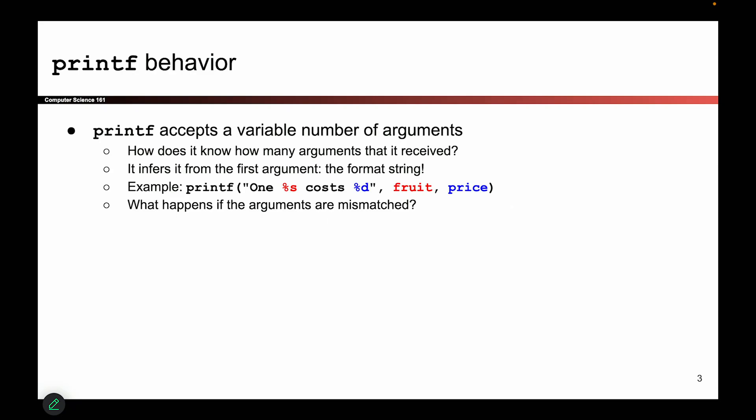This class of vulnerabilities is all about a function we've used all the time called printf. This is the function we use to print out values. Something you might have noticed if you try to use printf in C that differs from other languages like Python or Java is that printf takes in this kind of weird syntax where you have to add this percent sign. And if you don't, the compiler is going to start yelling at you. So what do these percent signs actually mean?